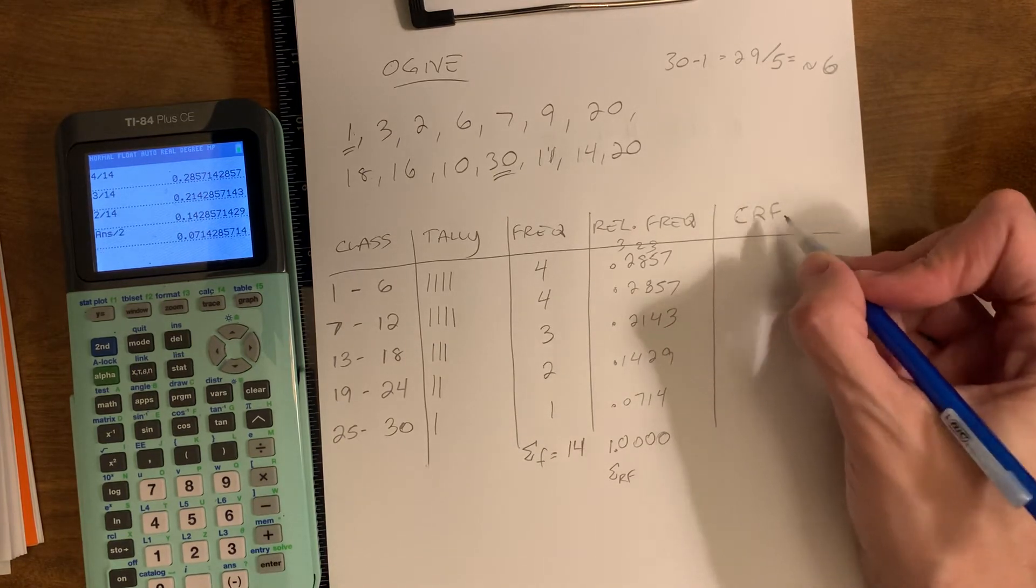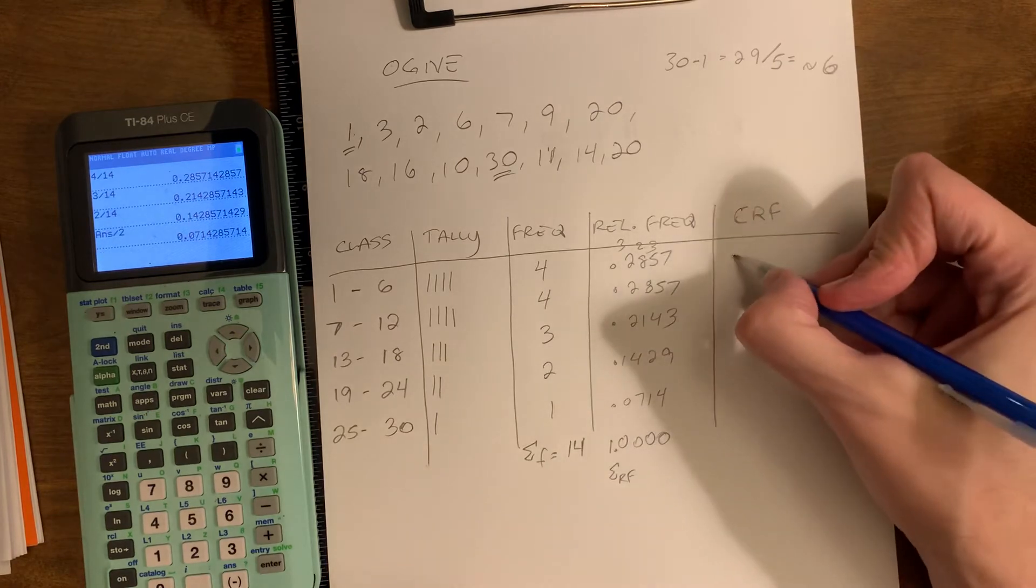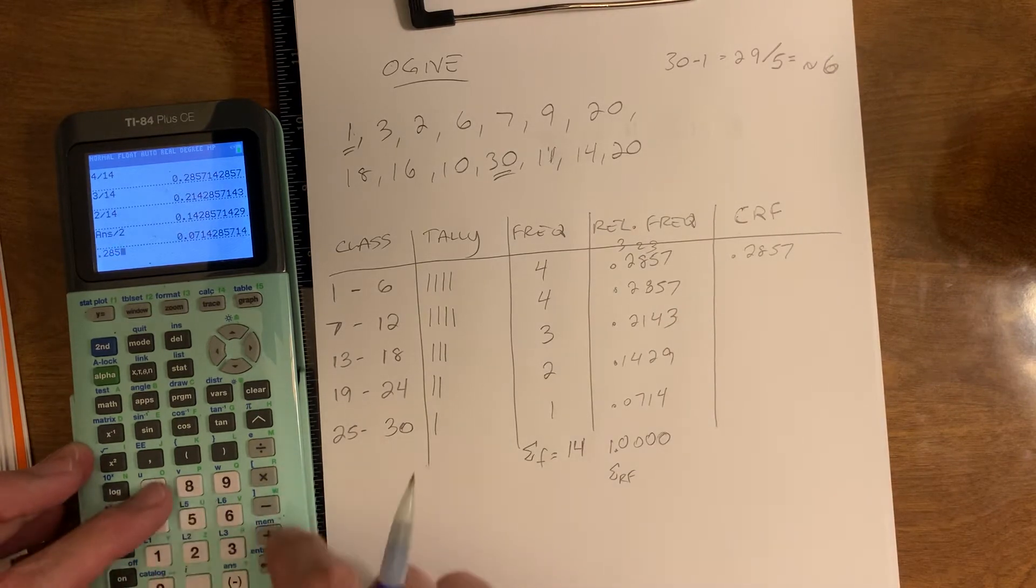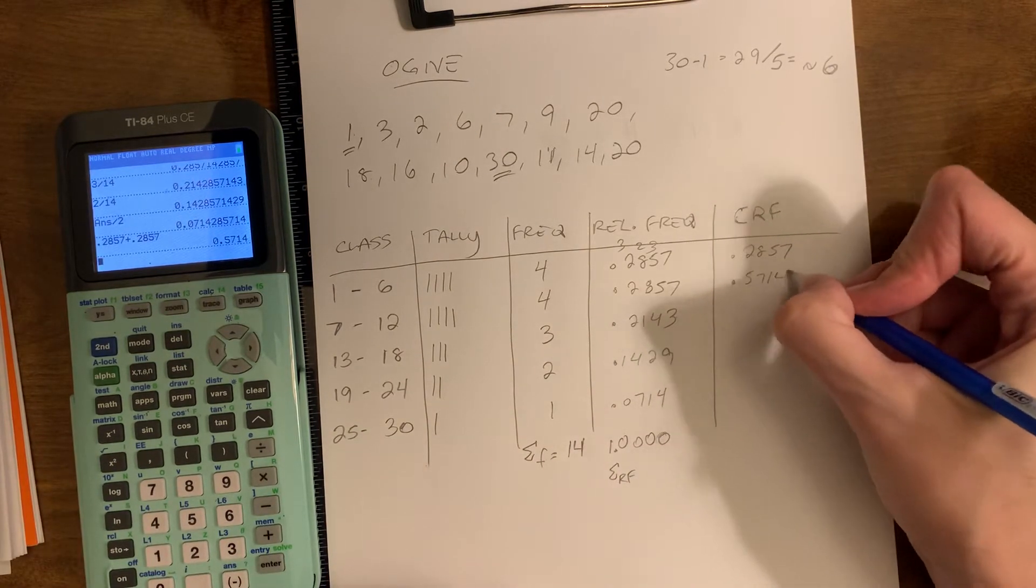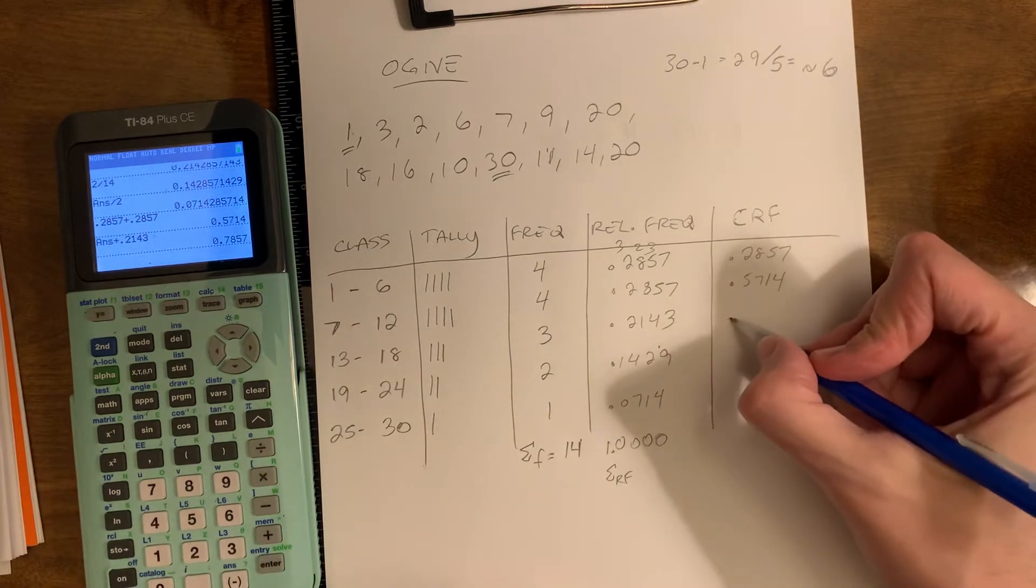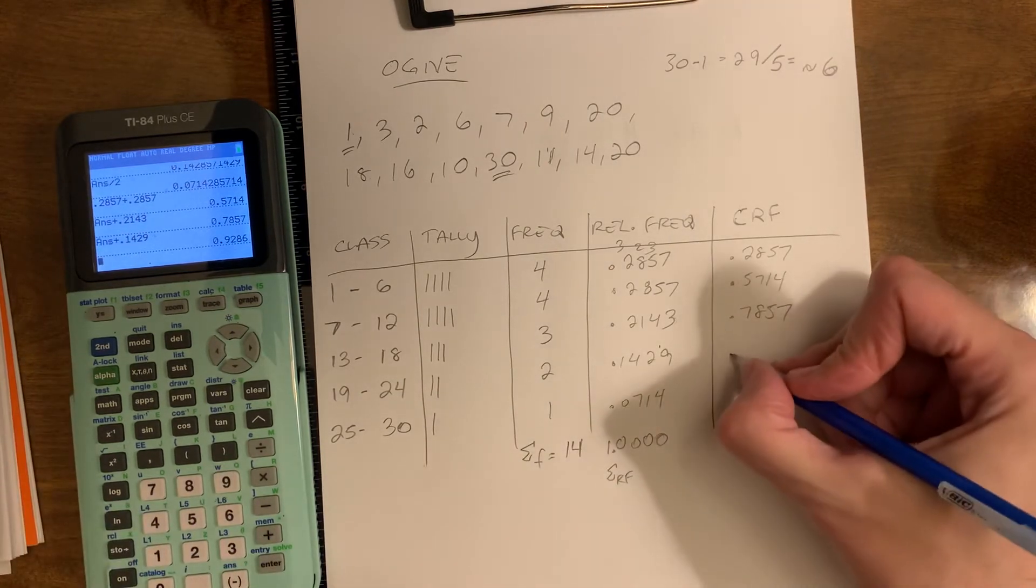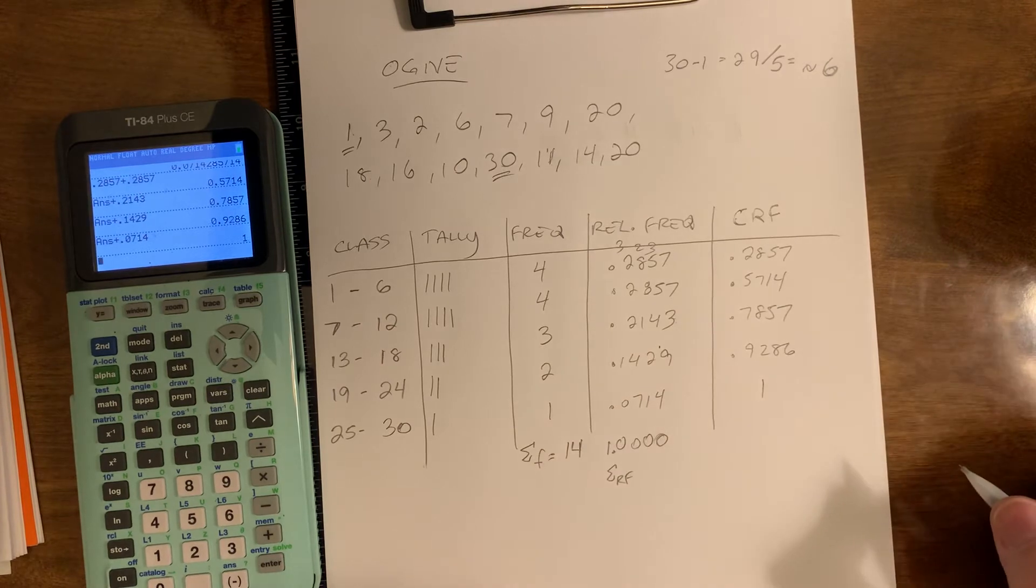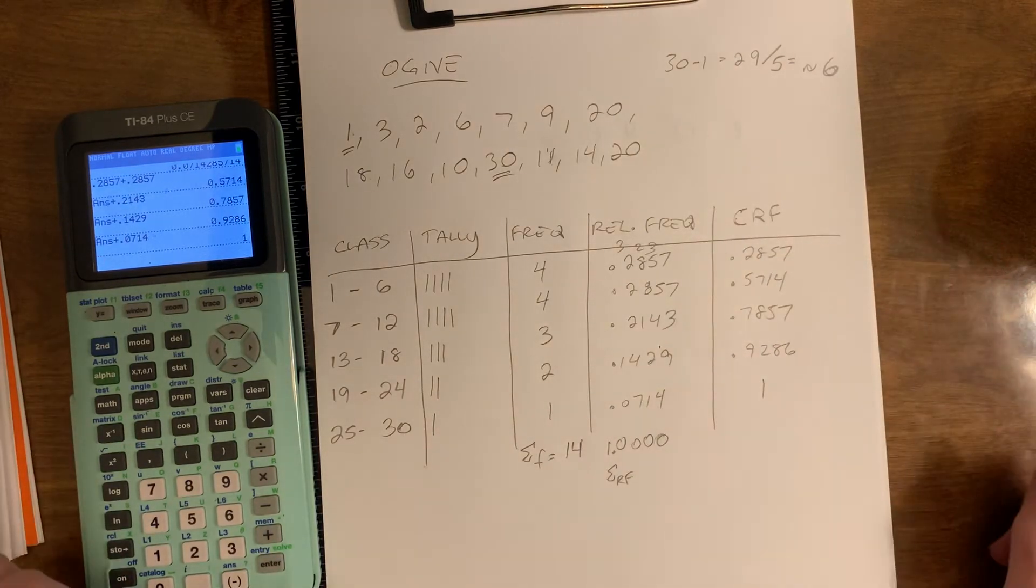It's asking you how much of the relative frequency has been accumulated by the end of each class. So the end of the first class has 0.2857. But by the end of the next class, 0.2857 has added another 0.2857, so now we have accumulated 0.5714. Then we're going to add the next relative frequency value, 0.2143, so we're at 0.7857. And then we're going to add 0.1429, 0.9286. And finally, we're going to add 0.0714, which is a perfect 1.